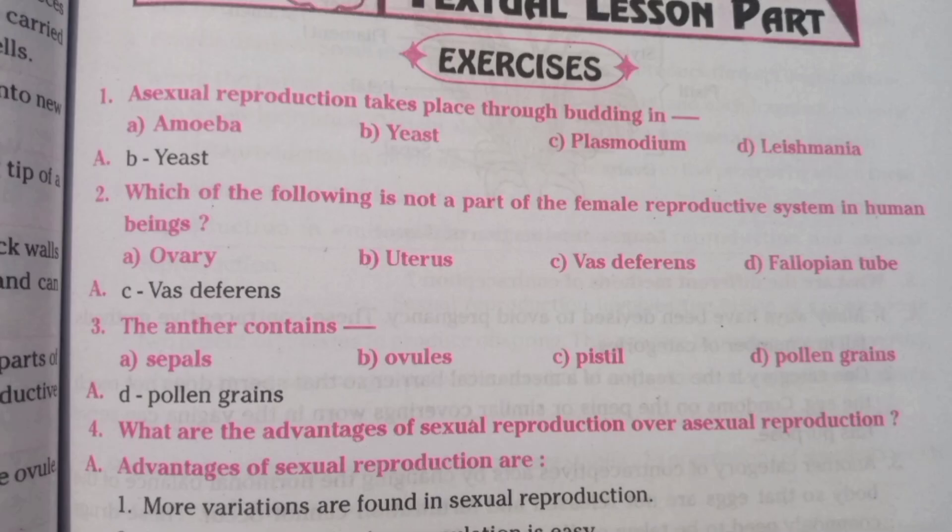Asexual reproduction takes place through budding. Yeast reproduces through budding.